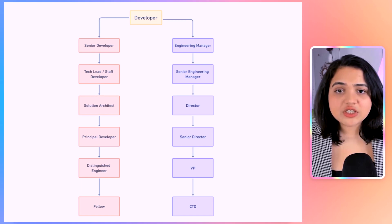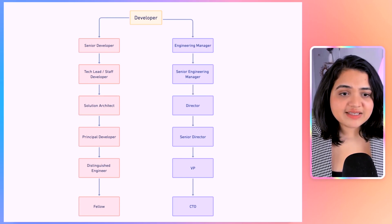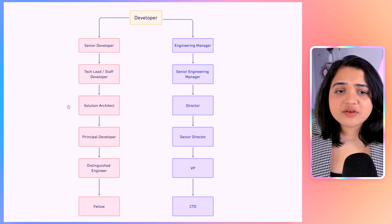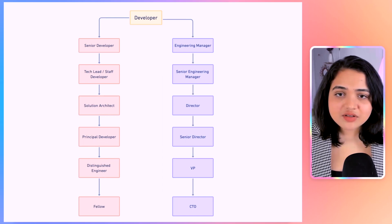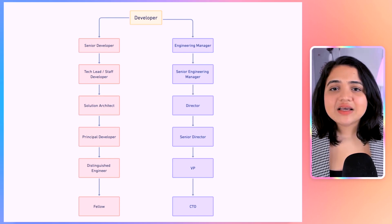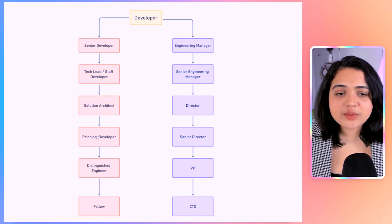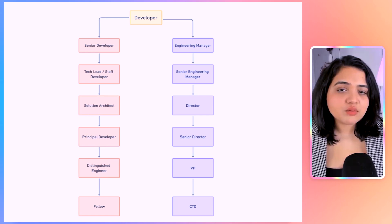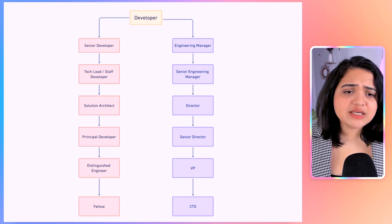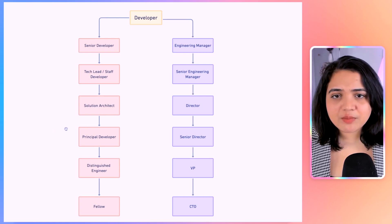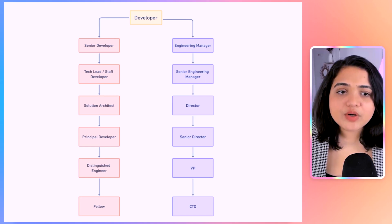A senior developer could also become a technical lead or staff developer, and a tech lead is more responsible for leading all the technical responsibilities of a team. Depending on the company, after a tech lead you can become a principal developer, a distinguished engineer, or a fellow. These levels with growing responsibilities may not be available in smaller or medium-sized companies because there's no need for them, but in larger Fortune 500 companies you will more likely see these roles so people can still grow and have something to strive for.